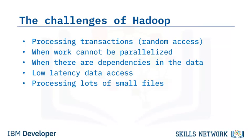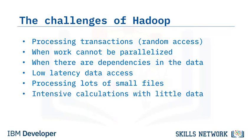Hadoop is also not good for processing lots of small files, although there is work being done in this area such as IBM's Adaptive MapReduce. Lastly, Hadoop is not good for intensive calculations with little data. To deal with the shortcomings of Hadoop, new tools like Hive were built on top of Hadoop. Hive provided SQL-like query capability and strong statistical functions. Pig was popular for its multi-query approach to cut down the number of times that the data is scanned.